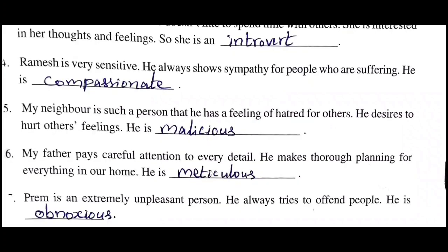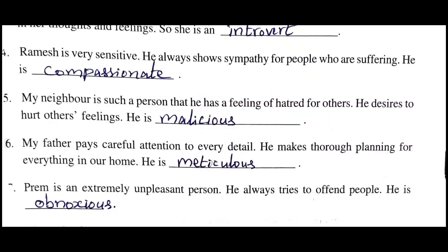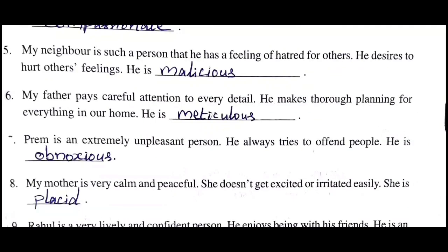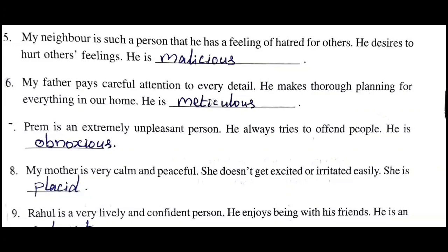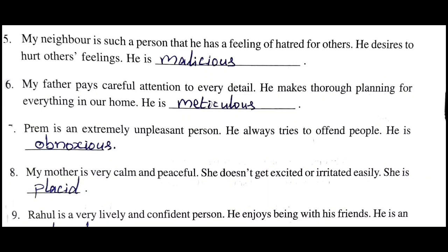Fourth sentence: 'Ramesh is very sensitive. He always shows sympathy for people who are suffering.' The answer is 'compassionate' - compassionate means showing sympathy for suffering people. Fifth sentence: 'My neighbor has a feeling of hatred for others and desires to hurt others' feelings.' The answer is 'malicious' - malicious means wishing harm to others, having hatred and desire to hurt. Malicious is the right answer here.